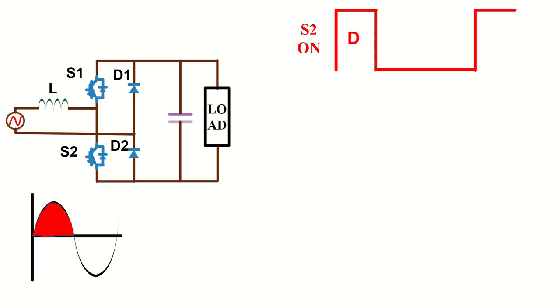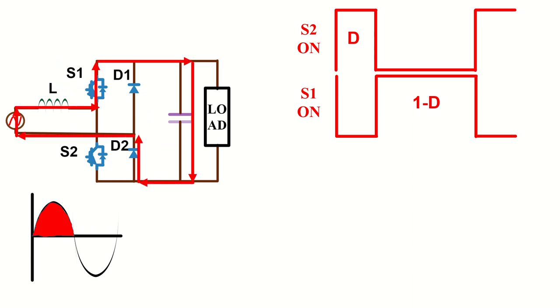Now for the remaining time of the switching cycle, that is 1 minus D duty ratio, the device S1 is turned on. This will discharge the energy in the inductor to the load.